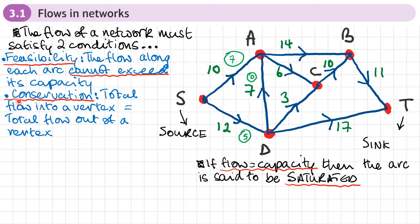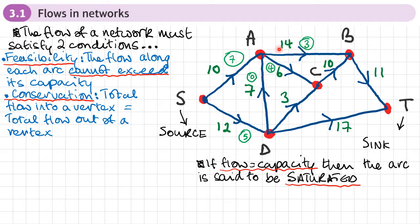The conservation condition is that the total flow into a vertex equals the total flow out of a vertex — we're talking about flow, not capacity. For example, if the total flow into vertex A is 7 (with 7 on one arc and 0 on another), then the total flow out must also be 7. I could have 4 flowing out on one arc and 3 on another. This satisfies both the conservation condition and the feasibility condition, since none of these flows exceed the arc capacities.